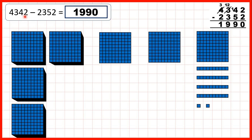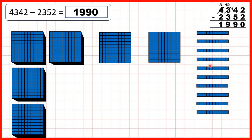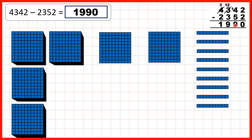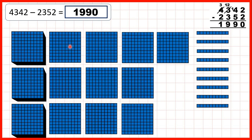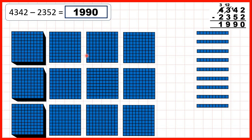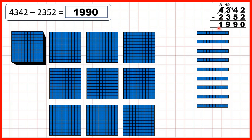Now 4,342 — so that's 4 thousands, 3 hundreds, 4 tens, and 2 ones. First we subtract our 2 ones to give us 0 as the ones digit. Now we have 4 tens but need to take 5 away: take away 4, exchange, then take away our 5th ten, to leave us with 9 as the tens digit. But now because we exchanged, we only have 2 hundreds but need to subtract 3. So we take away 2, then exchange our thousand for 10 more hundreds, and take away our 3rd hundred. That gives us 9 as the hundreds digit, and 3 minus 2 is 1, so we get 1 as our thousands digit.